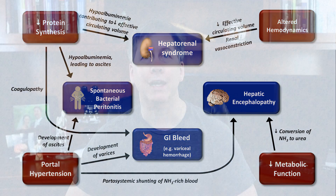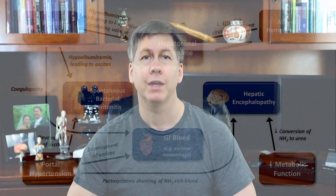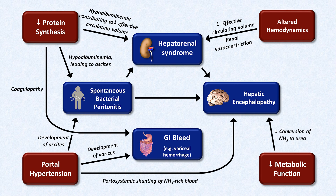I find it fascinating how all these pathophysiologic processes are interrelated and lead to a variety of distinct clinical conditions, but it gets even more interesting than that since these conditions can actually trigger one another. Consider that SBP can trigger the hepatorenal syndrome and hepatic encephalopathy, while the hepatorenal syndrome can itself trigger encephalopathy, and GI bleeds can trigger all three of the others.